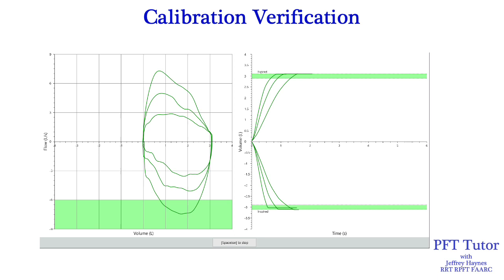This is an example of calibration verification — what you would be doing first thing in the morning when setting up your machines. As you can see on the right panel, these are the targets for both inspiratory and expiratory strokes at low, medium, and high speeds, and these strokes are outside of that range. In the left panel with the flow volume loop, each row that turns green indicates that the cal verification is within the target range. Only the inspiratory at high flow passed, so this failed calibration verification.